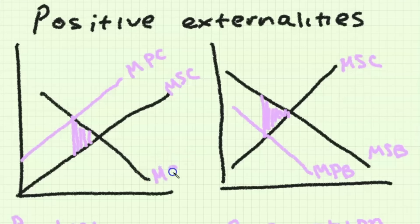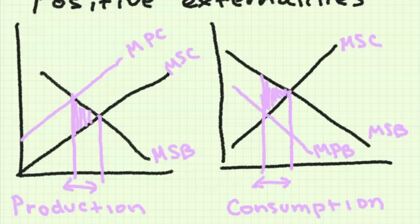We can have a positive production externality which means that the societal cost of producing something is lower than the private cost of the personal producer, and a positive externality of consumption when the benefit of you consuming something is greater for society than it might be for you.